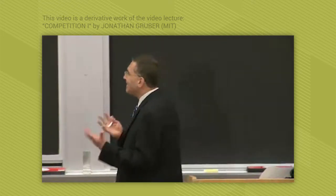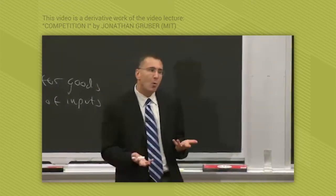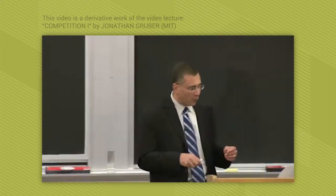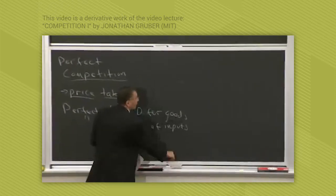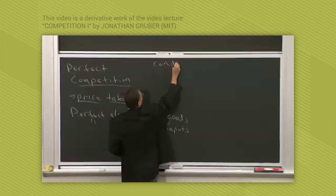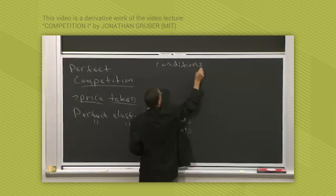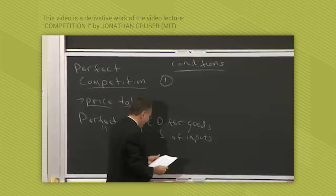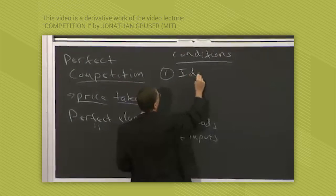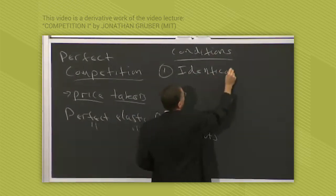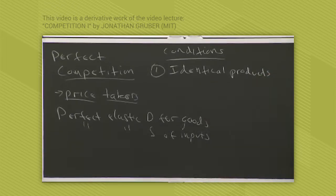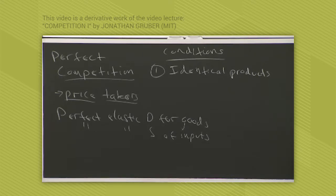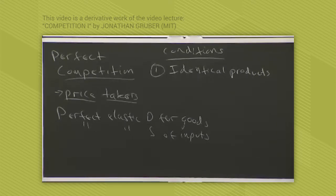So when does this make sense as a description of the world? Well, it makes sense as a description of the world under four conditions. There's four conditions under which perfect competition will exist. The first condition is identical products. They don't have to literally be identical. They have to be perceived by consumers as identical.